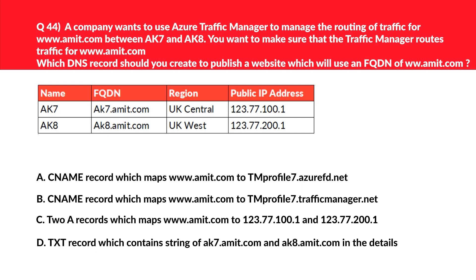This question will test your concepts on Azure Traffic Manager. Let's first look at option C, which maps www.amid.com to two IP addresses using A records. A records are not supported for Azure Traffic Manager, so this is incorrect. Let's now look at option D — a TXT record containing the string amid.com. Root domain mapping like amid.com is again not supported, therefore this is also an incorrect choice.